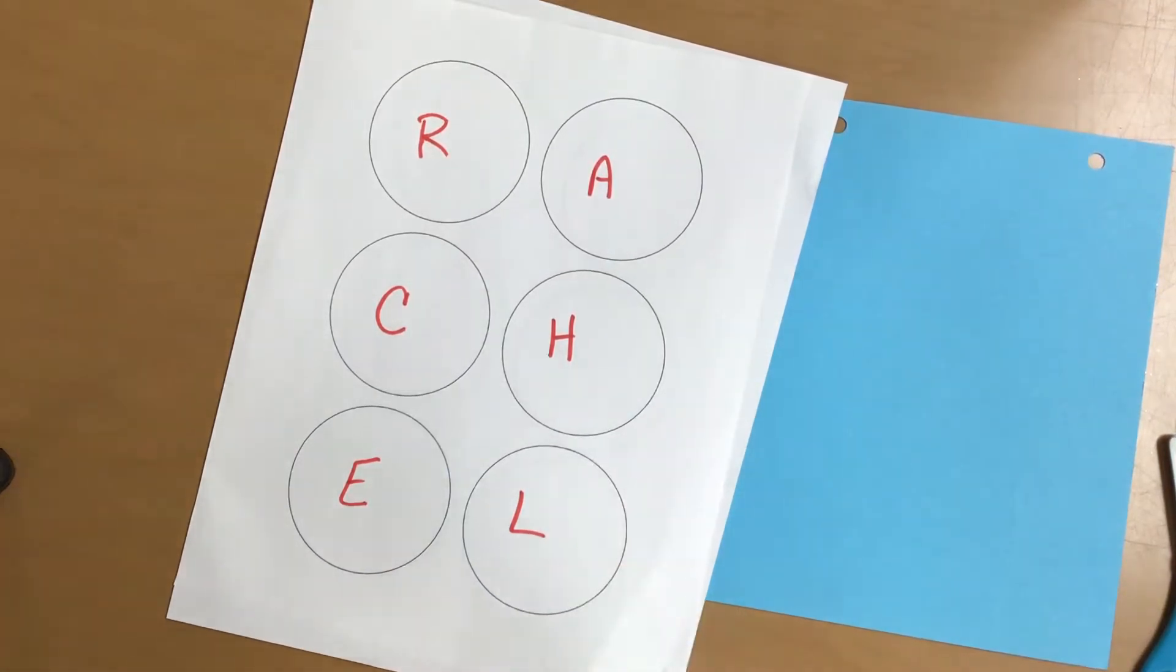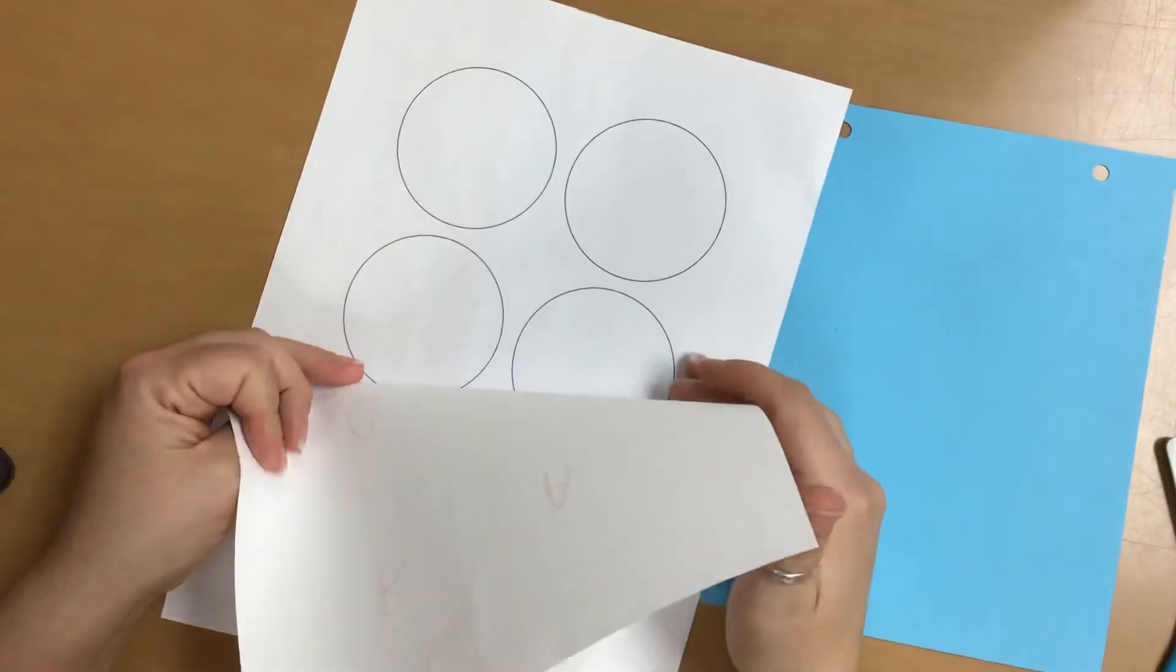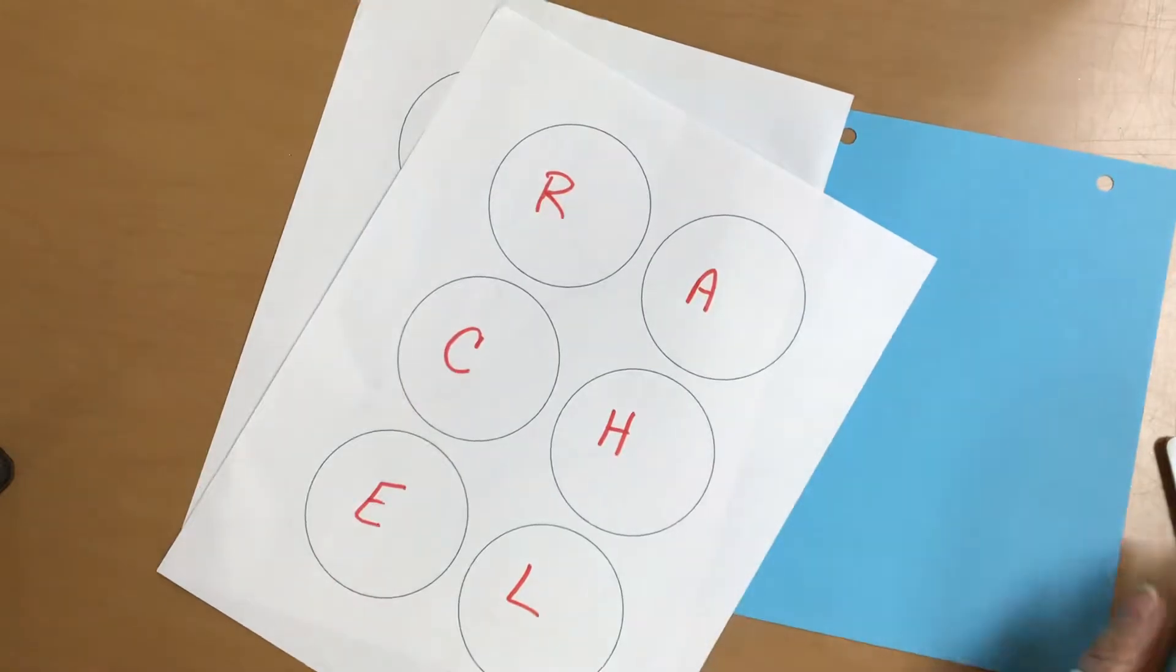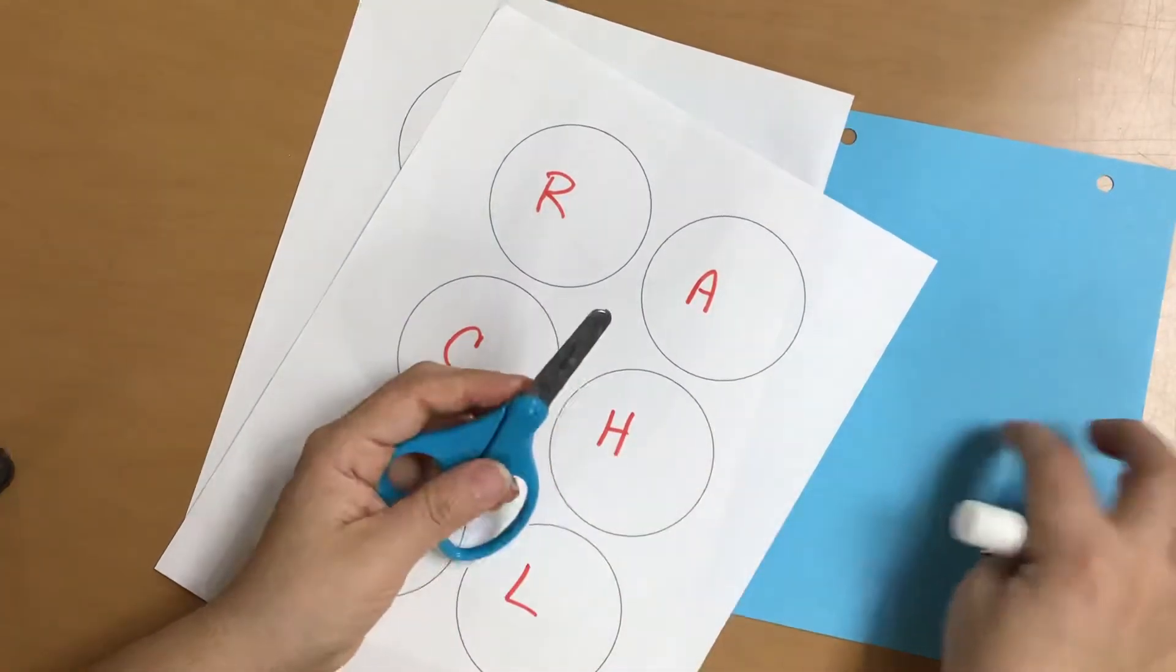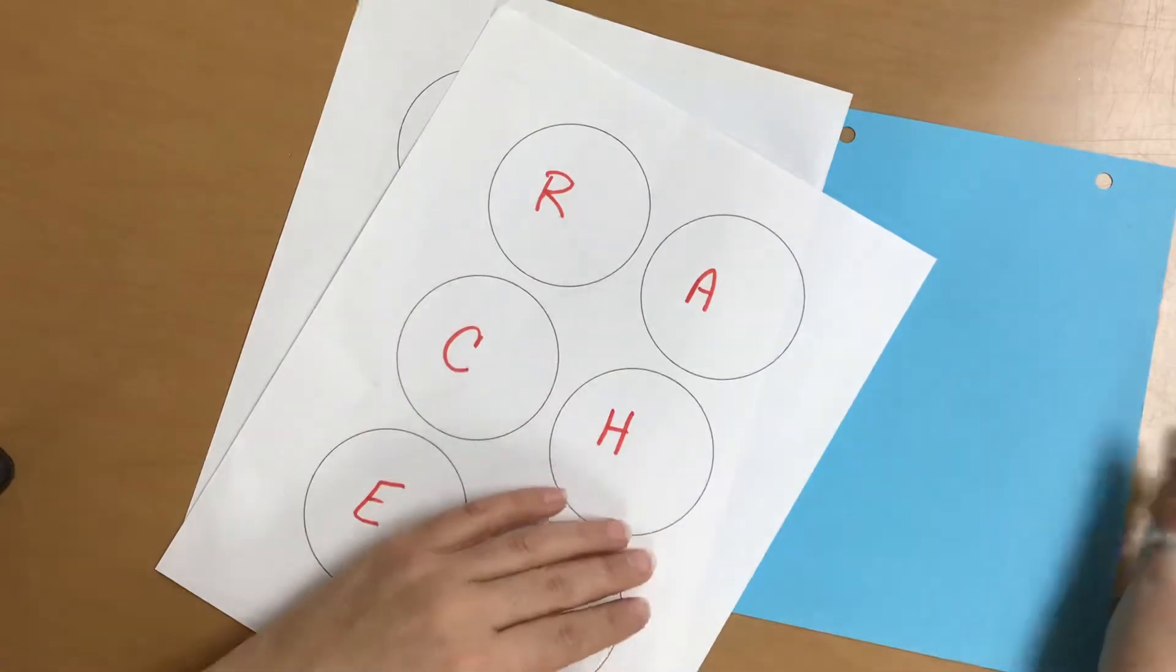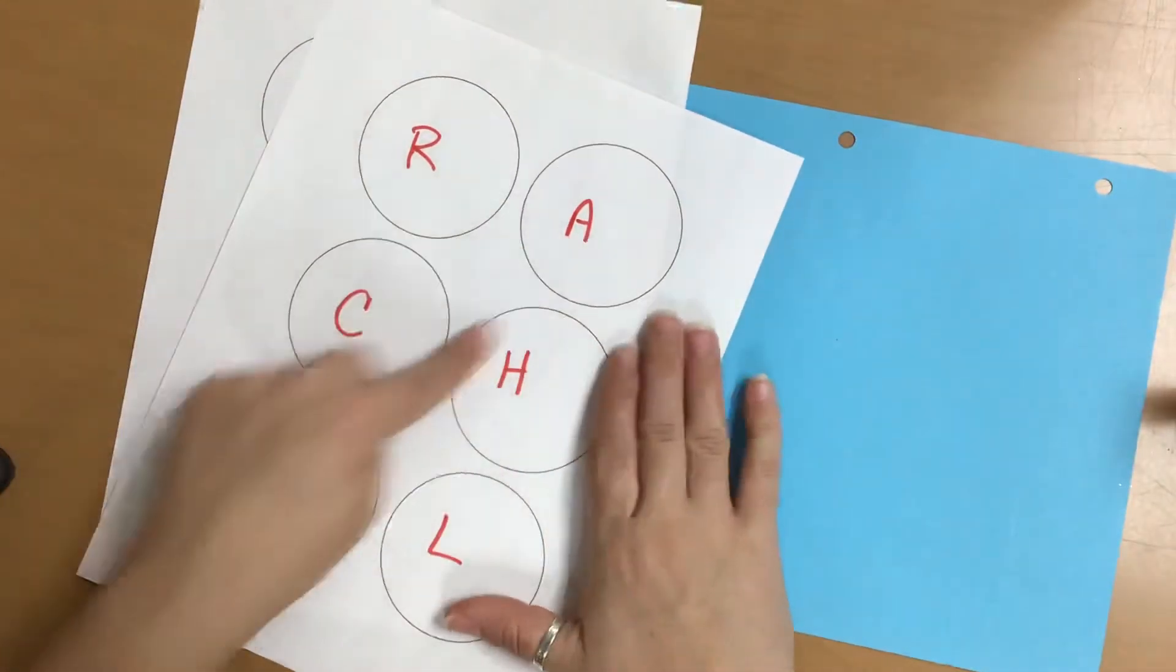We are going to do a project. Each one of you got a piece of paper with circles and letters in it, and then you should have also gotten some blank circles. So today you're going to need those circles, scissors, glue, and then some sort of other piece of paper if you want.